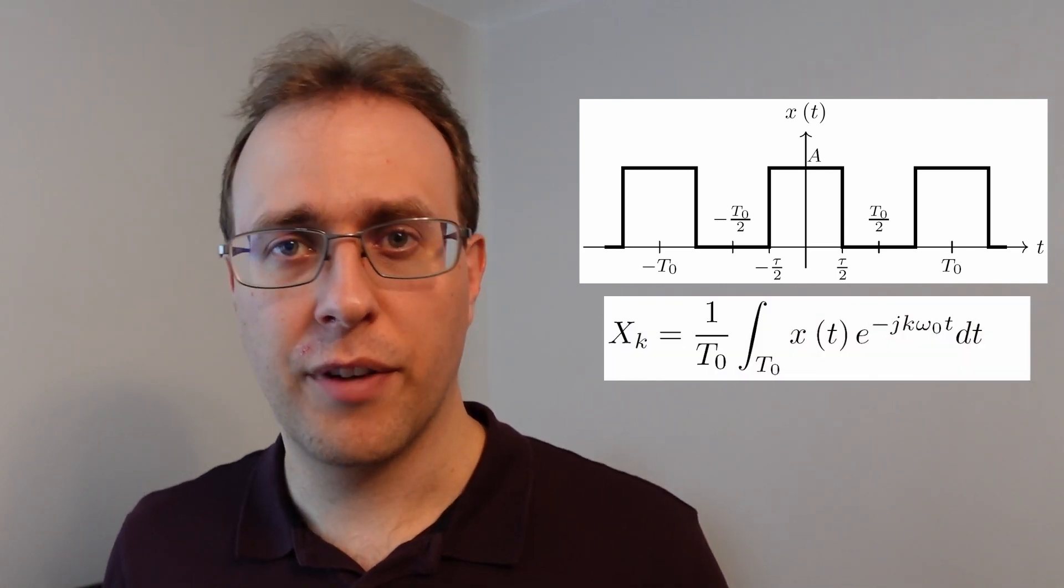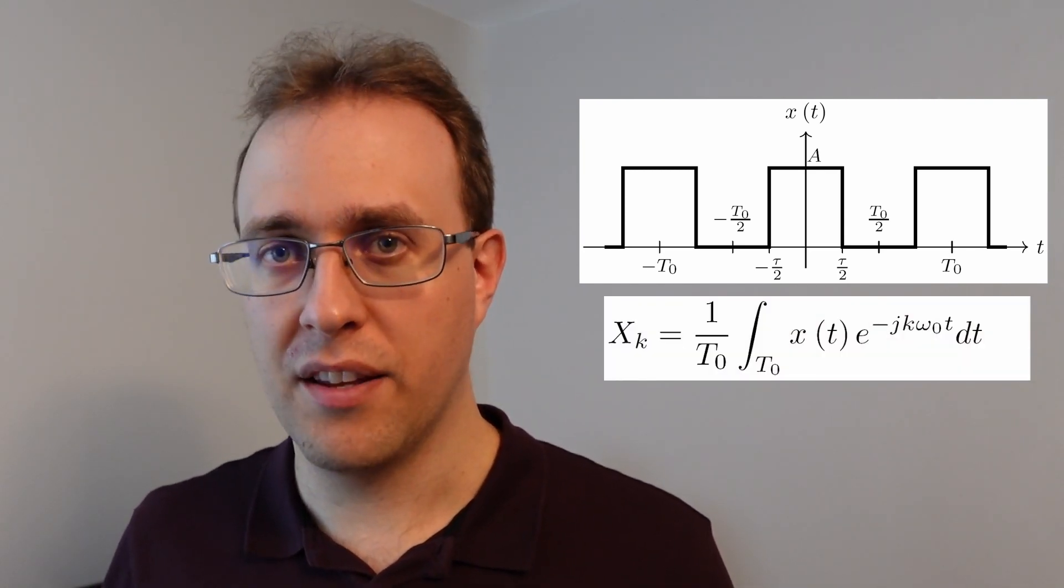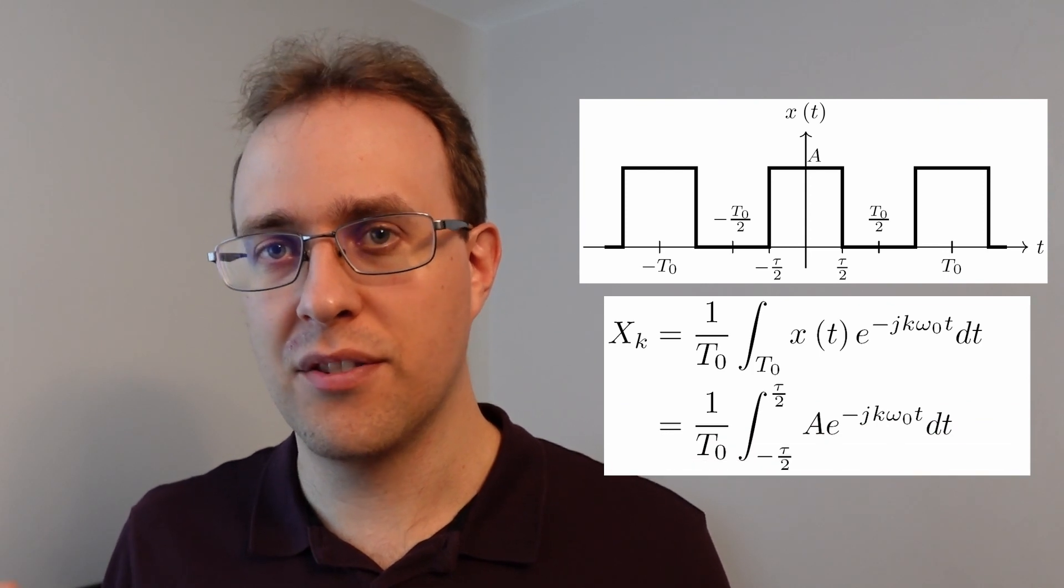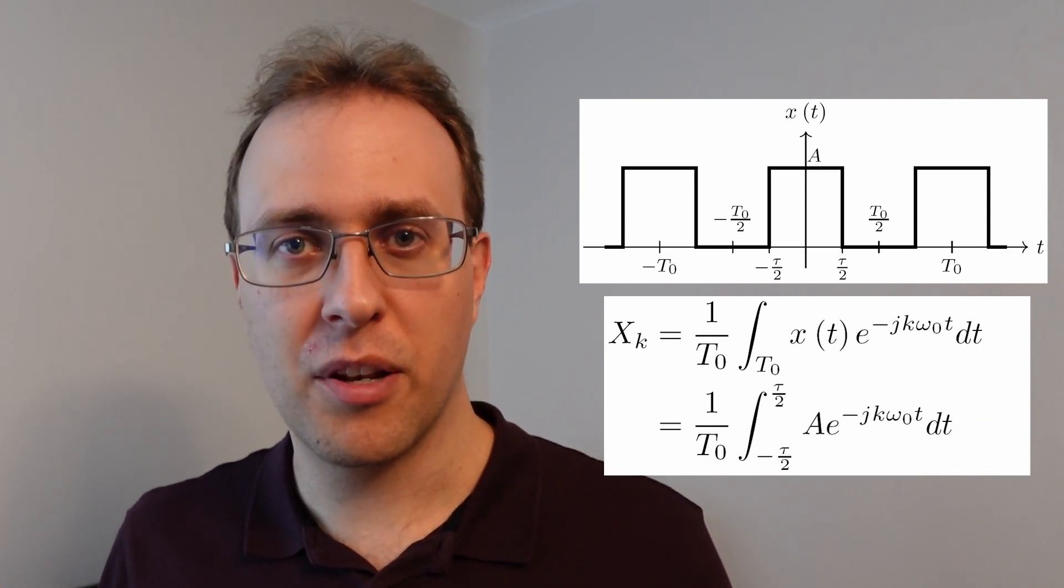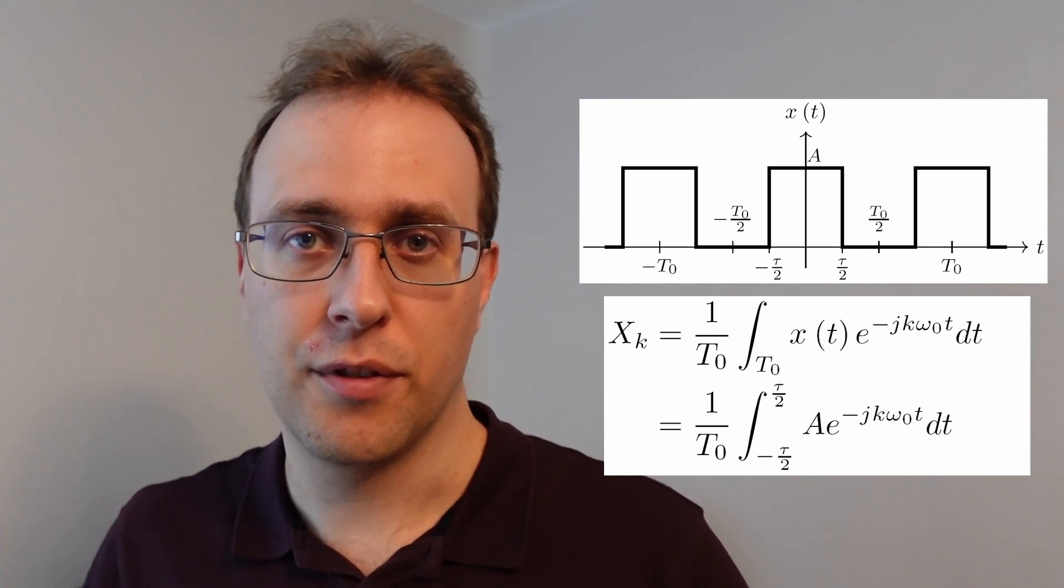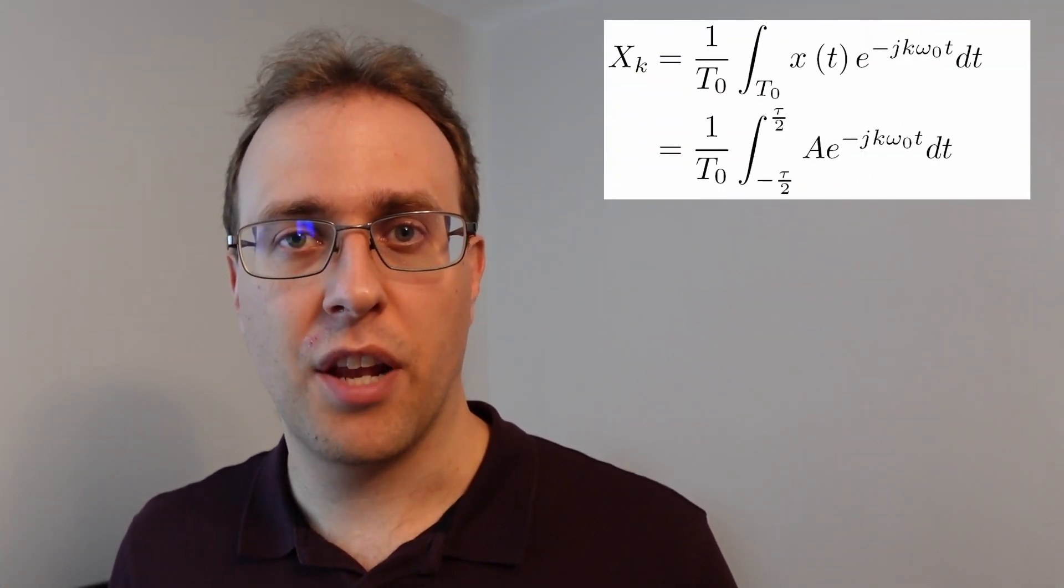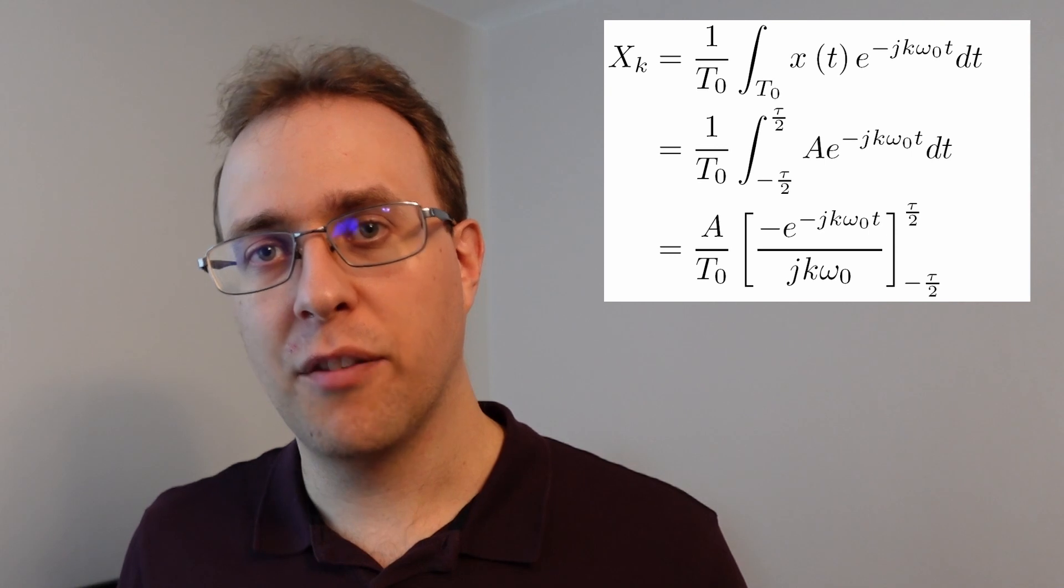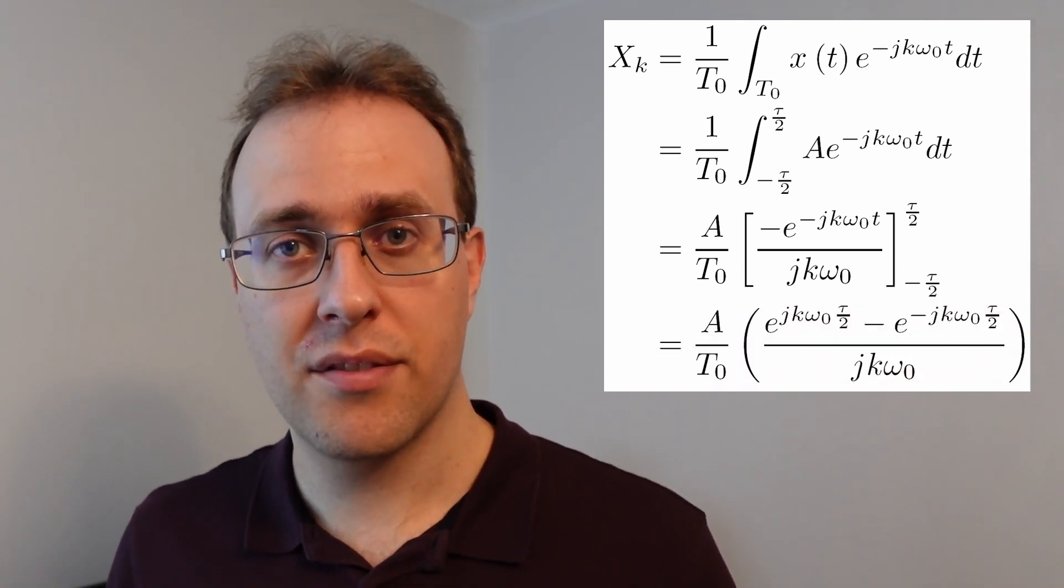Setting up the integral to find the Fourier coefficients is not too bad in this case, because we only have one non-zero interval over the fundamental period, and the square wave has a constant amplitude over this interval. We just have to integrate the exponential, so we divide by negative j times k times omega naught. Once we apply the limits, we get a difference of exponentials that turns into a sine from Euler's formula.